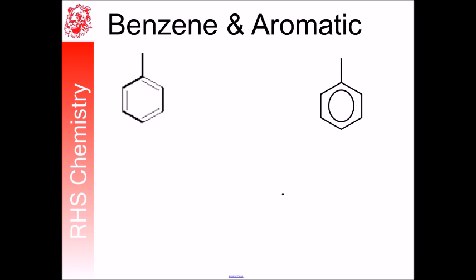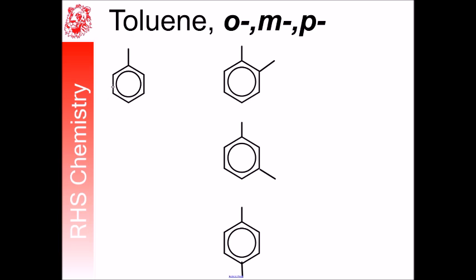Benzene can have branches, and so this would be called methyl benzene. But again, we see this so often it's called toluene, and it shows up in lots of adhesives and glues.